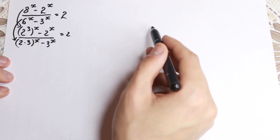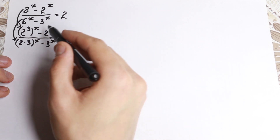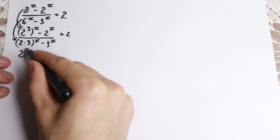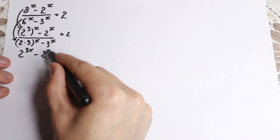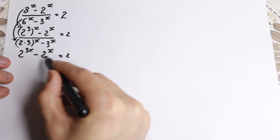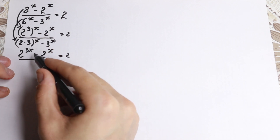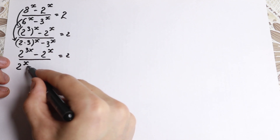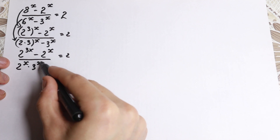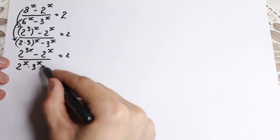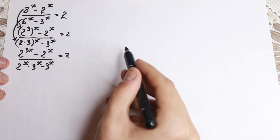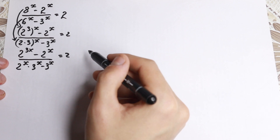Let's go to the next step. We need to apply the power rule here. If we have 2 cubed to the power x, we multiply the exponents: 3 times x. So we get 2 to the power 3x minus 2 to the x, equal to 2 in the numerator. In the denominator, we apply the product power rule: 6 to the x becomes 2 to the x times 3 to the x. So we have 2 to the x times 3 to the x minus 3 to the x, equal to 2.